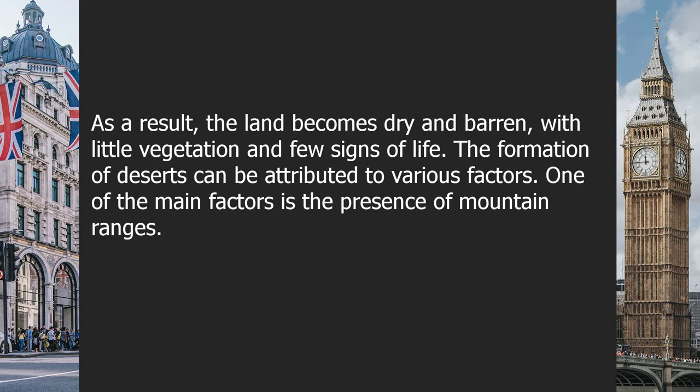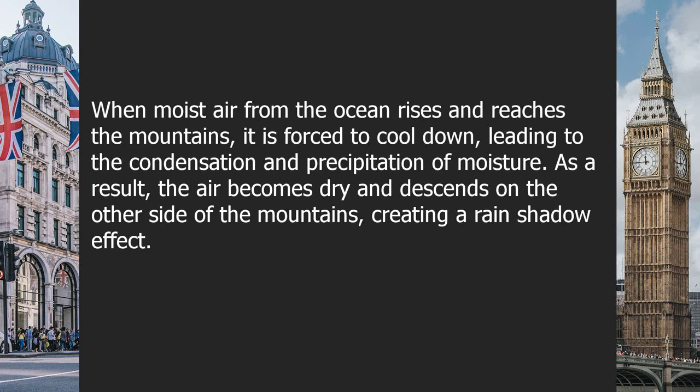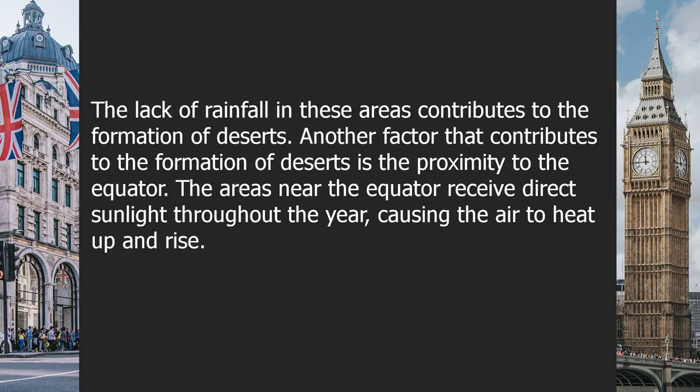The formation of deserts can be attributed to various factors. One of the main factors is the presence of mountain ranges. When moist air from the ocean rises and reaches the mountains, it is forced to cool down, leading to the condensation and precipitation of moisture. As a result, the air becomes dry and descends on the other side of the mountains, creating a rain shadow effect. The lack of rainfall in these areas contributes to the formation of deserts.